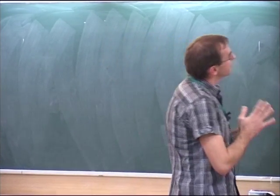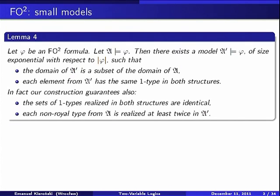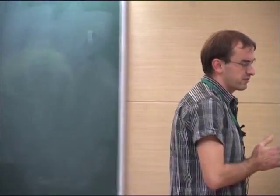In fact, this construction guarantees some additional properties: the set of one-types realized in both structures are identical. All the types realized in the original structure are also realized in this new small model. And each non-royal type — recall that a type is royal if it is realized in a structure exactly once — from the original structure is realized in the new structure at least twice. This was the first property we obtained yesterday.